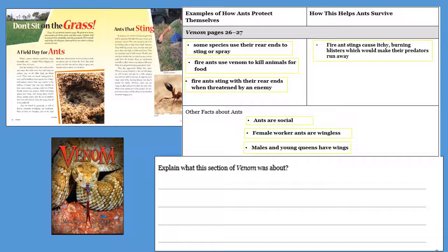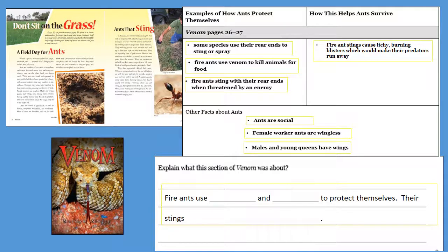Now take a few minutes and write down what you think this section of Venom was about. Use my sentence starters to help you: 'Fire ants use blank and blank to protect themselves. Their stings blank.' Fill in that information from the chart. Pause the video now if you need more time to complete this work in your purple workbook.